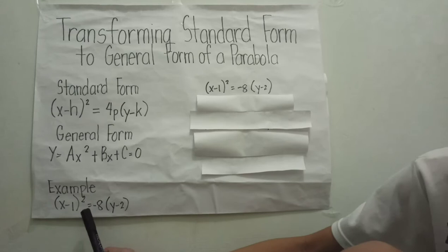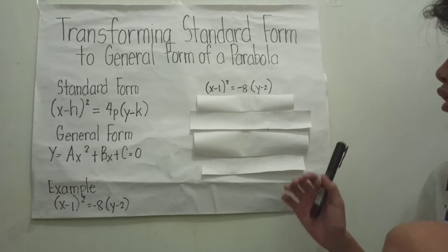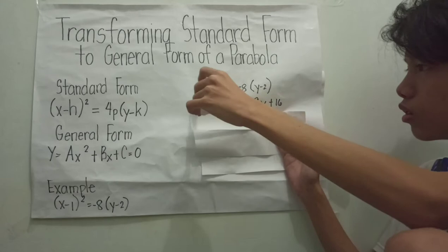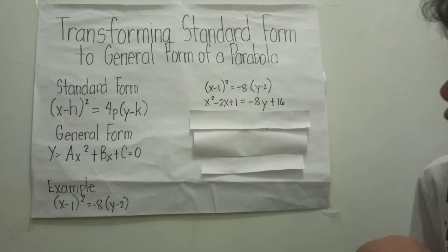Here is our example: (x minus 1) squared equals negative 8(y minus 2). Our first step would be expanding. After expanding, our equation will look like this: x squared minus 2x plus 1 equals negative 8y plus 16.